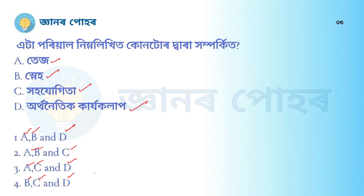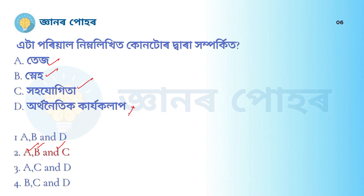The correct answer is option B — that is A, B, and C — which comprises blood relation (tase), affection (sneh), and care (koha, joheta). Economic activities do not make a difference in family relations.